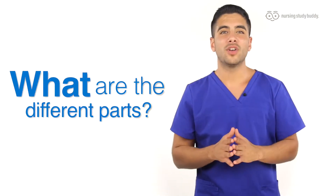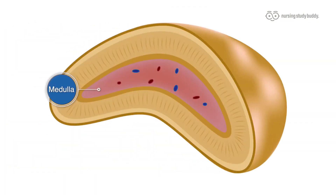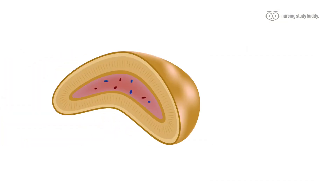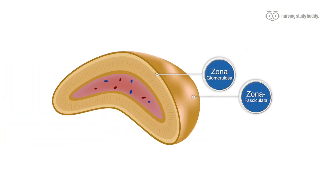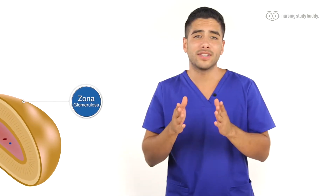So what are the different parts of the adrenal glands? The adrenal glands can be broken up into two main parts: we have the medulla and then we have the cortex. The cortex can be broken up even further into three main parts: the zona glomerulosa, the zona fasciculata, and the zona reticularis.